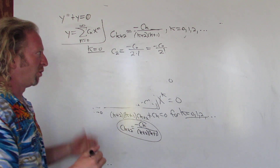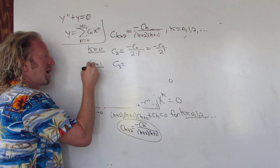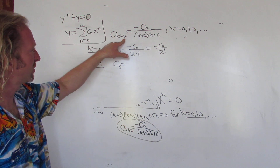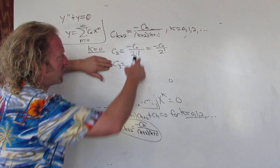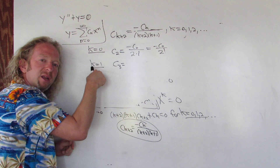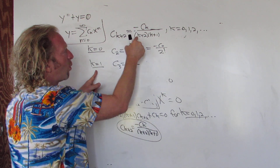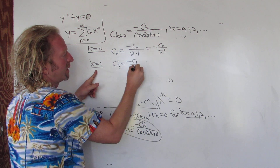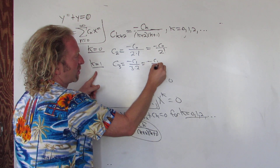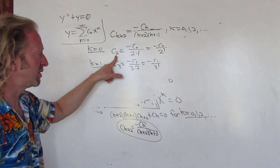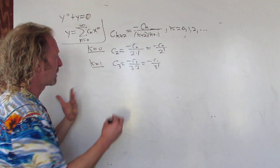When k equals 0, we get c sub 2 equals negative c sub 0 over 2 times 1, which is 2 factorial. When k equals 1, we get c sub 3 equals negative c sub 1 over 3 times 2 — and 3 times 2 times 1 is 3 factorial. So c sub 3 equals negative c sub 1 over 3 factorial. They're both negative so far.